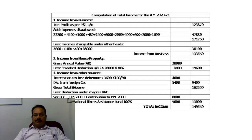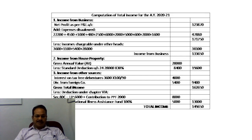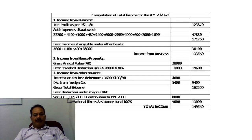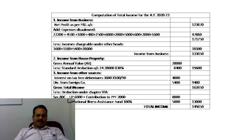Total income: 1,49,650. This completes our discussion on assessment of individuals — we looked at the Gross Total Income, computed income under each head, and applied Chapter 6A deductions. That completes our discussion on Income Tax for the 6th semester.